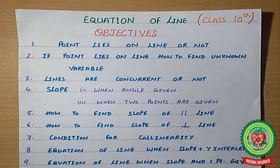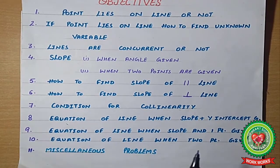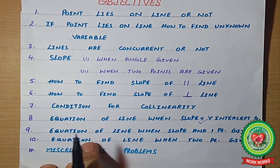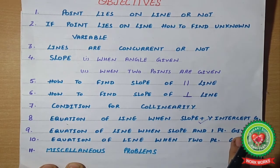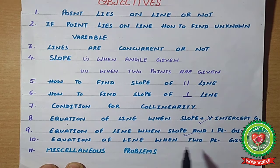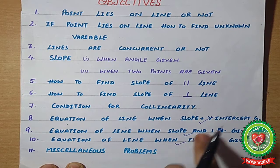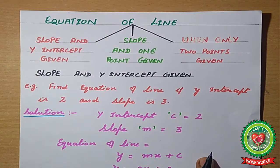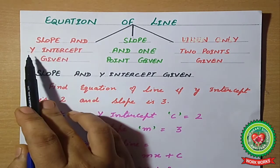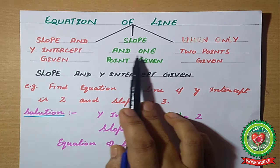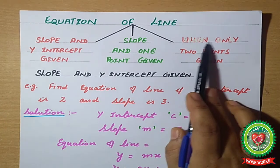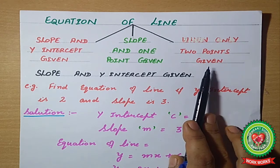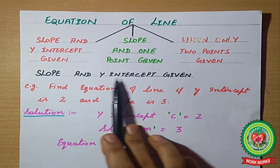Today, in continuation with this topic, we will learn how to find the equation of a line when slope and y-intercept are given, when slope and one point is given, and when two points are given. Today's topic is how to find out the equation of a line under these three conditions.